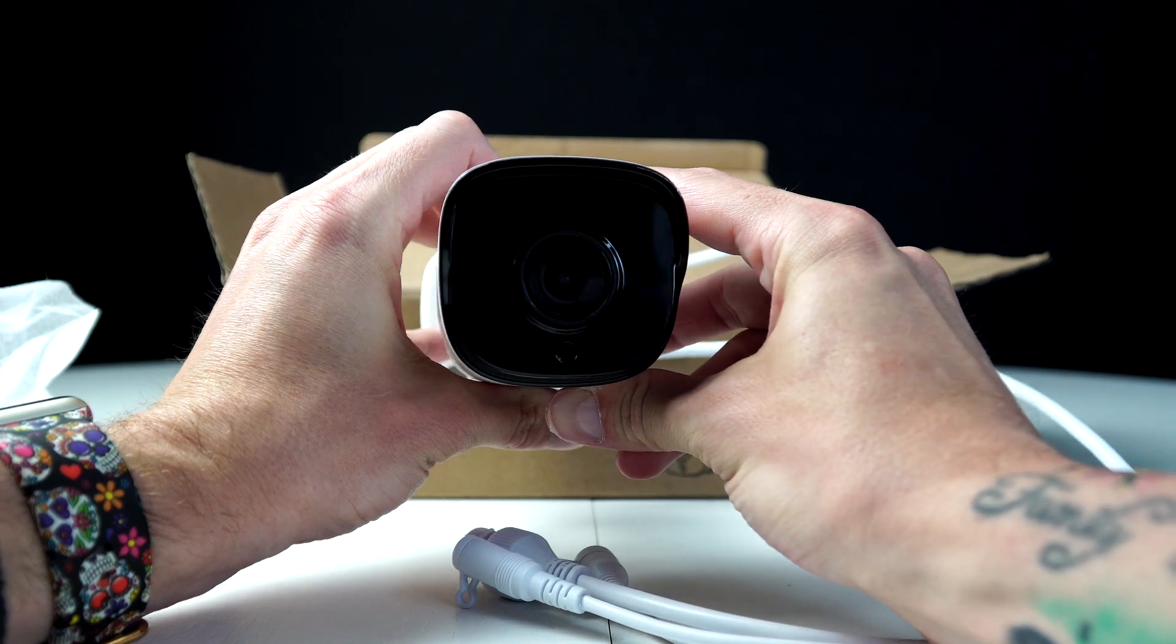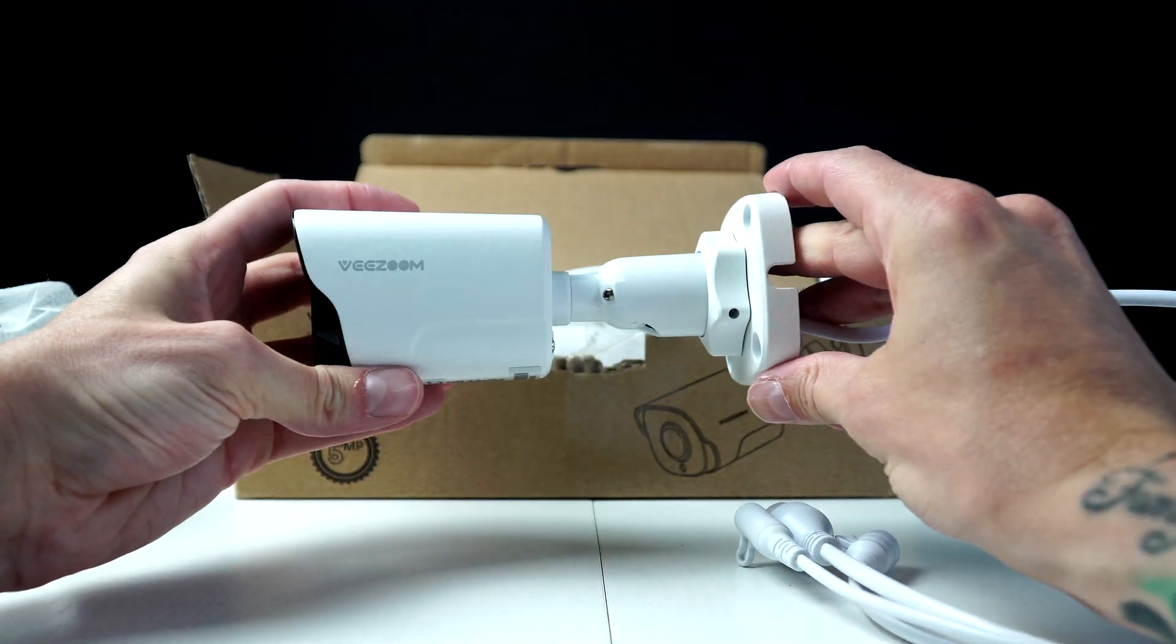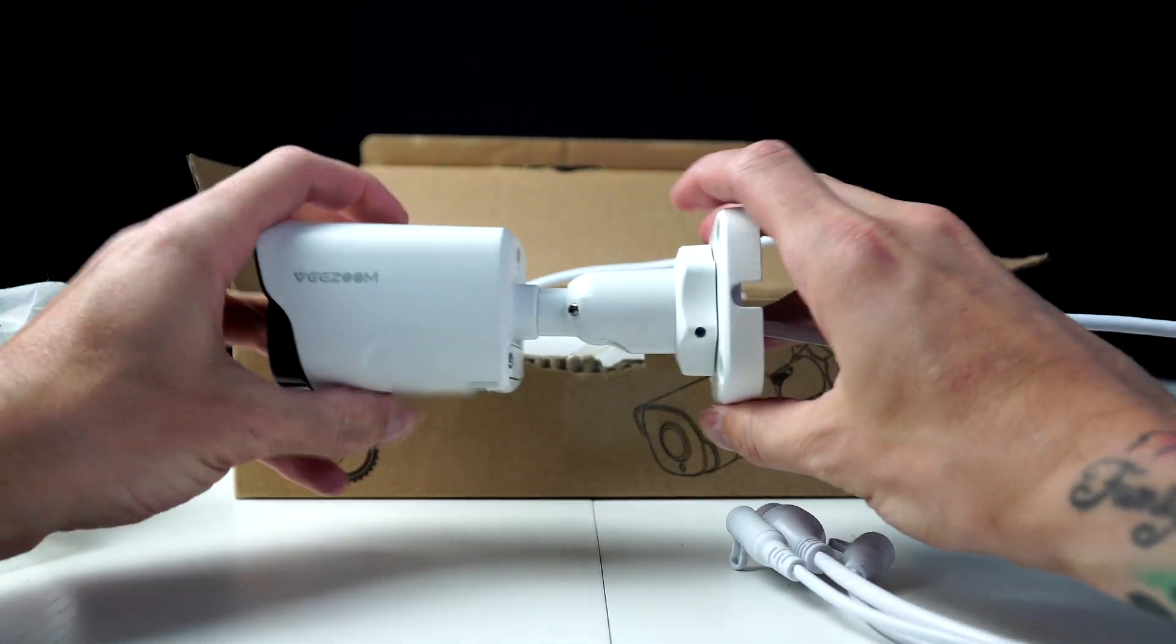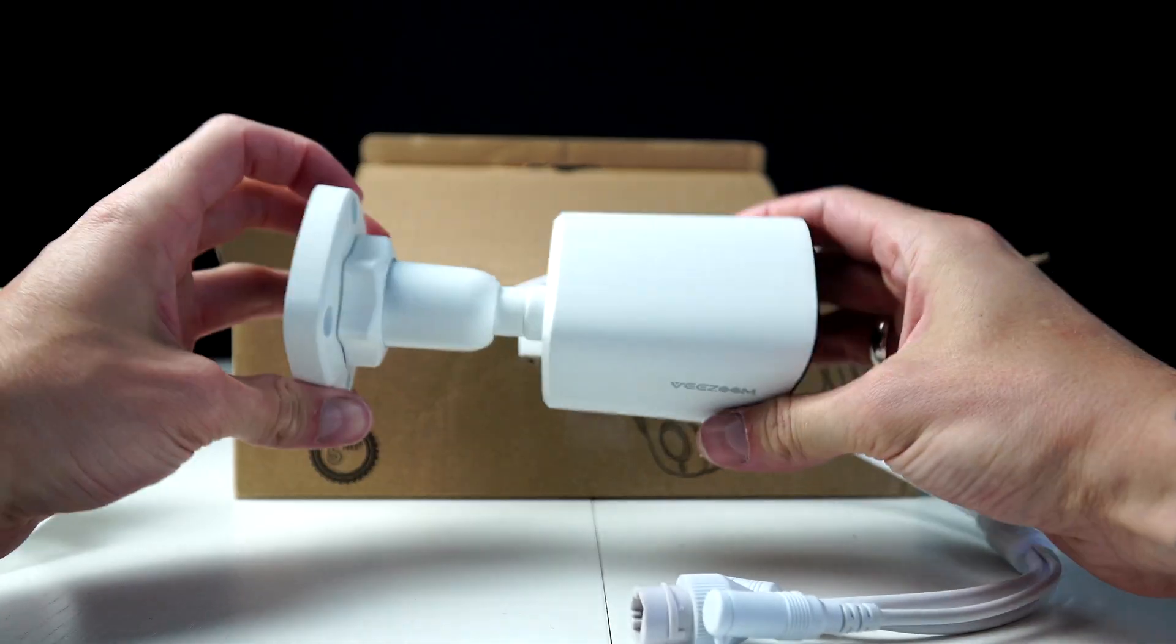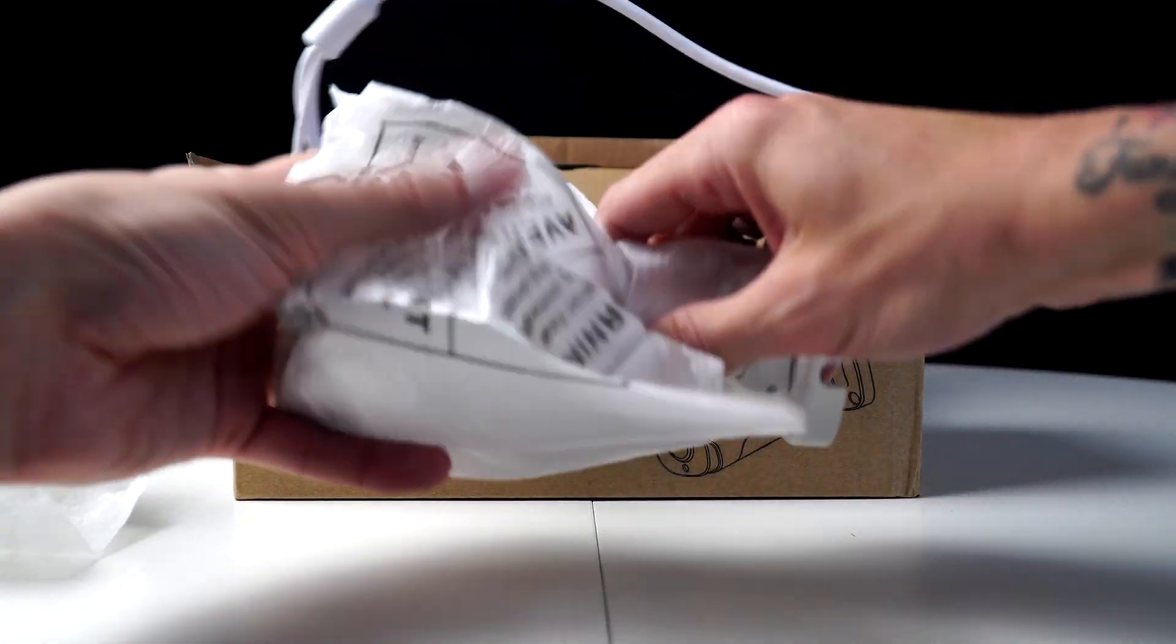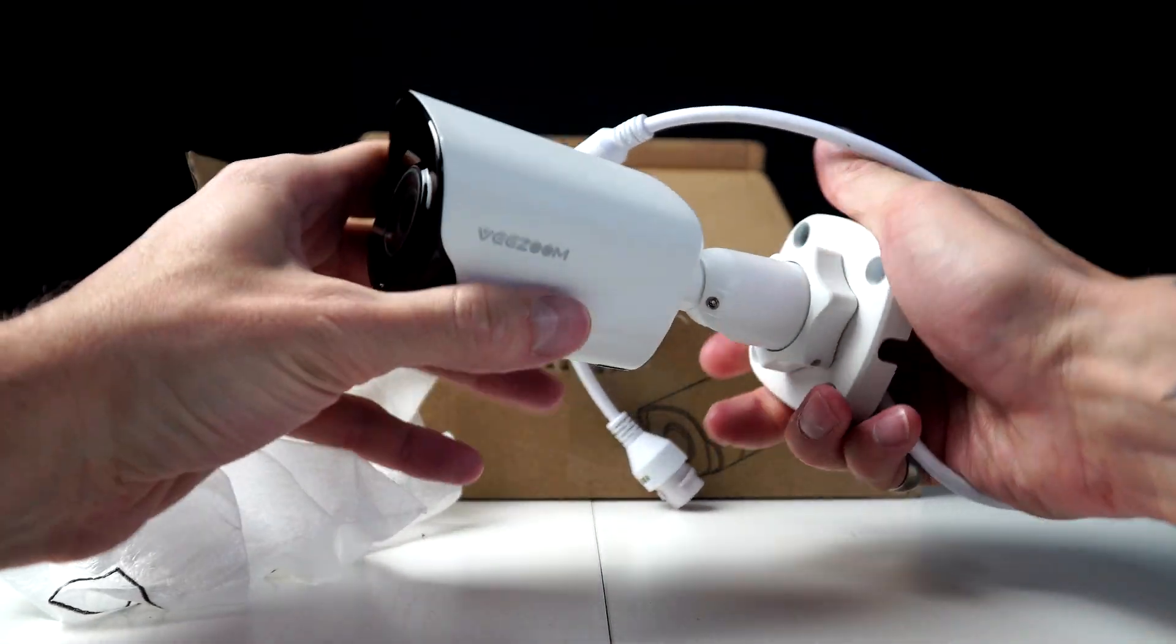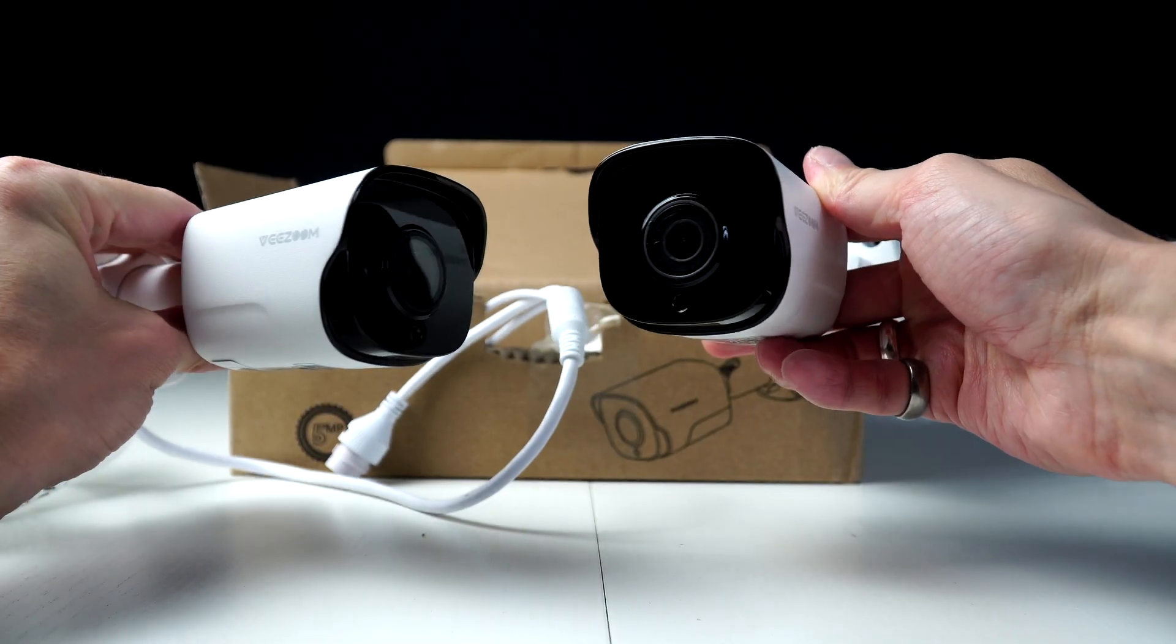Here we have the barcode on the bottom, which we'll scan when setting up our cameras on the app. These cameras have infrared light to see in the dark up to 100 feet. It has a built-in mic. It also has a micro SD card slot, and the maximum SD card that you can use is 256 gigabyte, which is not included.